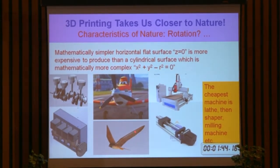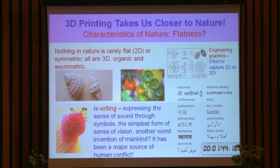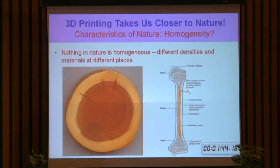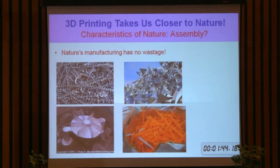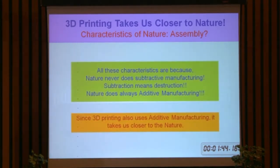This is a big deviation for us from nature — we should probably not have invented the wheel. In nature, nothing is flat; everything is 3D and organic. But all man-made objects are homogeneous. Look at wood, look at a bone — nothing is homogeneous inside. But if we find anything inhomogeneous, we reject the part. Nothing is assembled in nature separately — we make parts and then assemble, which is another inefficient way. We have a lot of wastage in our manufacturing processes; in nature there is no wastage. All this is because nature does things in an additive way — nature rarely does subtractive manufacturing. Therefore, 3D printing, being an additive manufacturing process, is taking us closer to nature. This is my first claim.